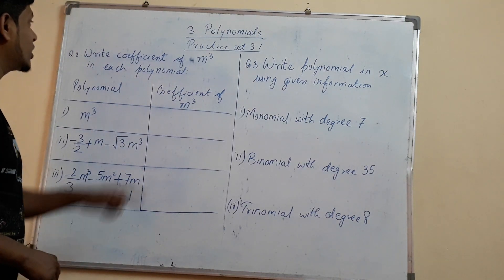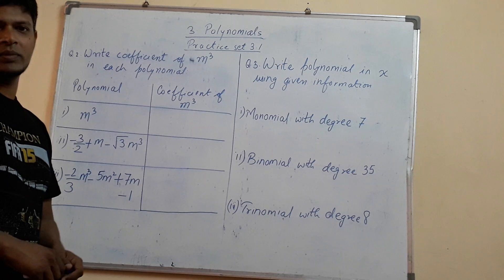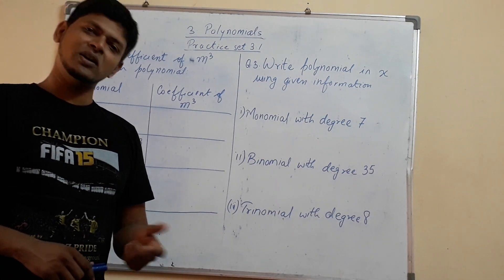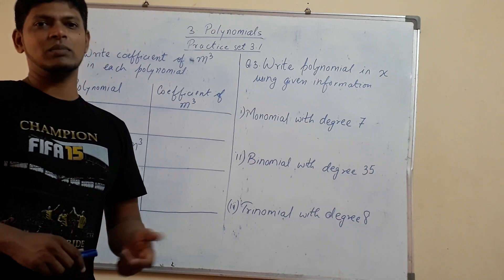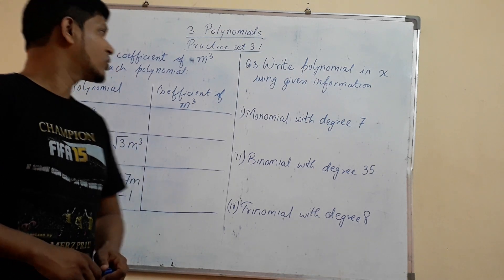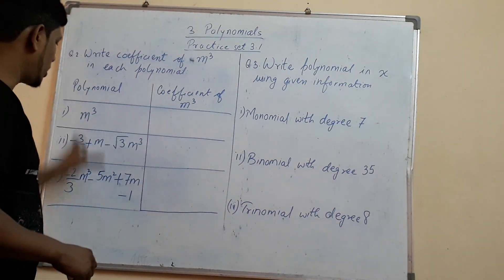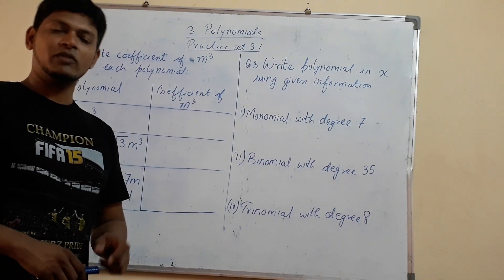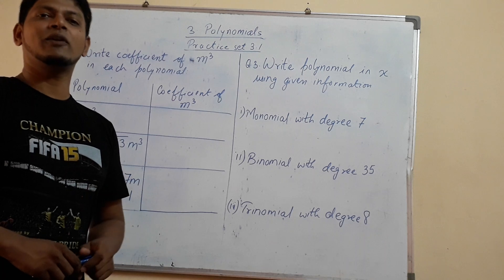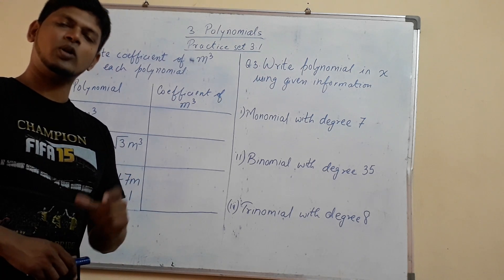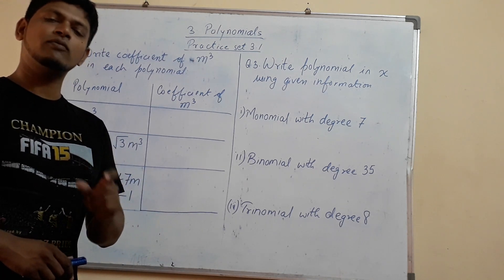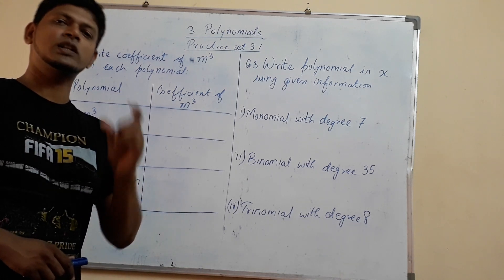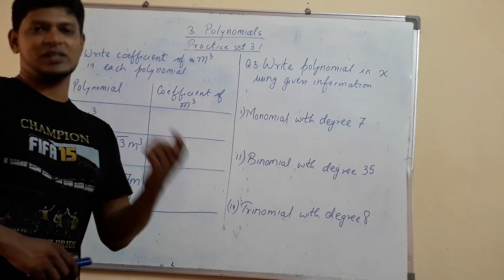Here it is asked to write the coefficient of mq. The coefficient is the number or the constant which is along with the variable, and the variable can have various powers. We need to see the variable mq and write the coefficient or the number or the constant which is along with it, including its sign. When we talk about coefficient, it is not really just the number but also its sign.